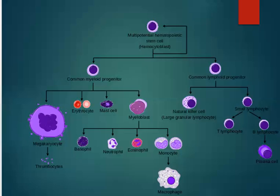You may notice some of the words give away what they do. For example, when you see 'blast,' it means the beginning or stem cell. And when you see 'cyte,' it means a mature cell. So for example, erythroblasts would give rise to the erythrocytes.